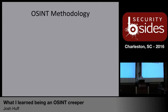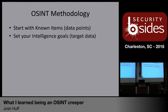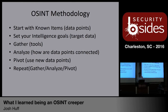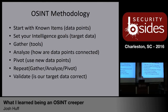Doing these exercises, I started to drill out the methodology I was following on a case-by-case basis. It starts with your known items or data points — whatever is given in the actual OSINT that's out there. Then go back to the definition: set an intelligence goal — what is your target data? Get your tools to analyze the data and see how those data points are connected. Then pivot using new data points, gather, analyze, pivot — repeat until you get to your target data. Once you've gotten there, try to validate: is our data correct? There's a lot of interconnected information out there, so validation is very important, or you will just spiderweb into nothingness.